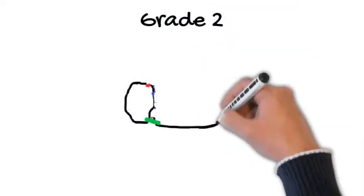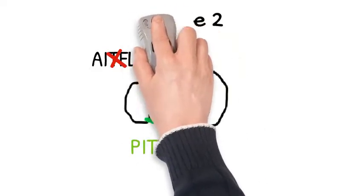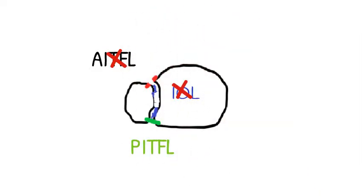A grade 2 injury means you go through the front and the middle. So you go through the AITFL and the IOL, but your PITFL at the back is intact.